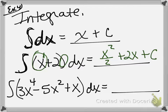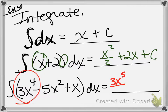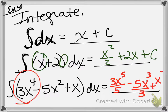Then we have a longer polynomial for the third example, and we're still just going to go step by step. 3x to the fourth becomes 3x to the fifth divided by 5. 5x squared becomes 5x to the third divided by 3. x becomes x squared divided by 2. And don't forget your plus c.